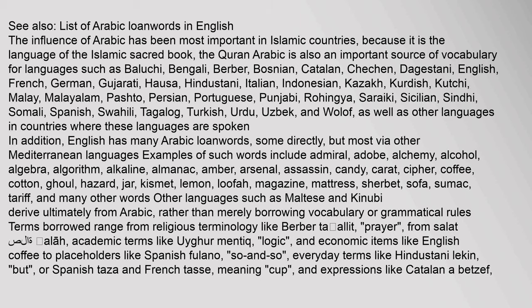English has many Arabic loanwords, some directly, but most via other Mediterranean languages. Examples of such words include admiral, adobe, alchemy, alcohol, algebra, algorithm, alkaline, almanac, amber, arsenal, assassin, candy, carrot, cypher, coffee, cotton, ghoul, hazard, jar, kismet, lemon, loofah, magazine, mattress, sherbet, sofa, sumac, tariff, and many other words. Other languages such as Maltese and Kinubi derive ultimately from Arabic, rather than merely borrowing vocabulary or grammatical rules.